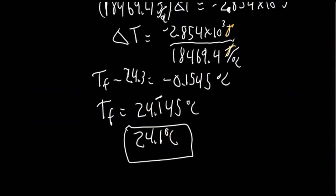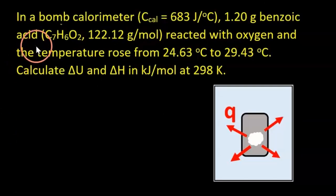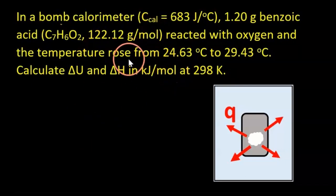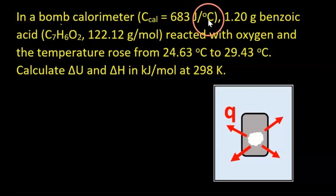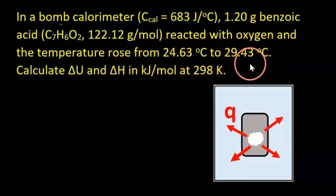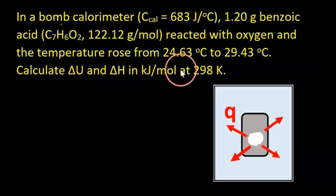This last problem involves bomb calorimetry, which is quite common on midterms and final exams. In a bomb calorimeter with a heat capacity of 683 joules per degree Celsius, 1.20 grams of benzoic acid reacted with oxygen. The temperature rose from 24.63 degrees Celsius to 29.43 degrees Celsius. We need to calculate the change in internal energy and the change in enthalpy in kilojoules per mole at 298 Kelvin.